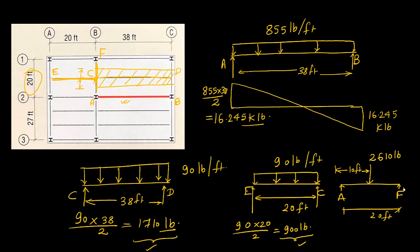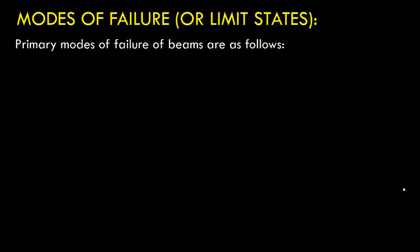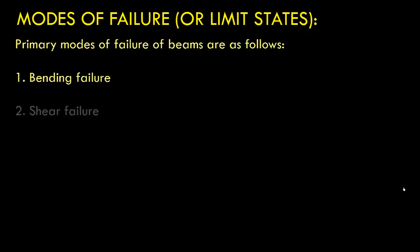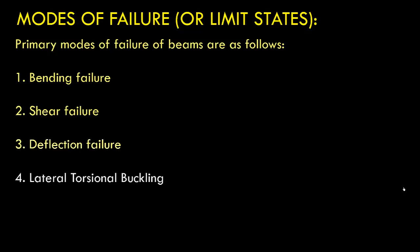Now that we have discussed how to calculate load distribution, we will see what are the different failure modes of a beam. We primarily have these failure modes: bending failure, shear failure, deflection failure — that is excessive deflection — lateral torsional buckling, local buckling, and finally local failure. We will discuss each of these modes in detail.